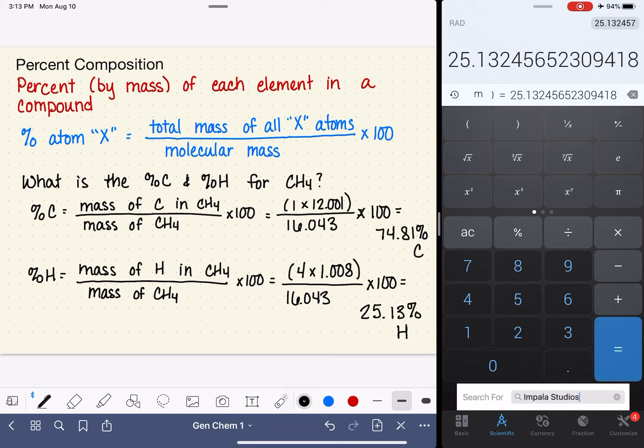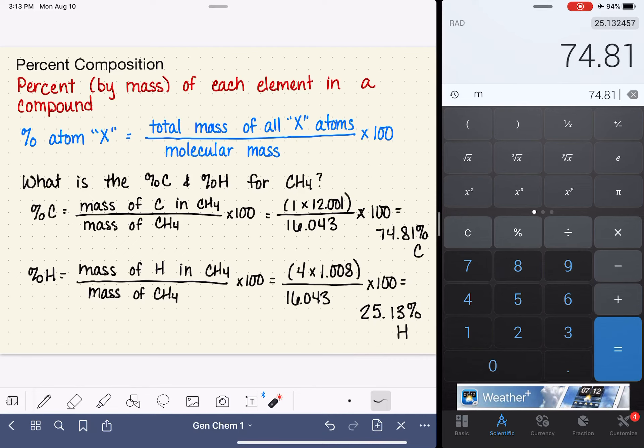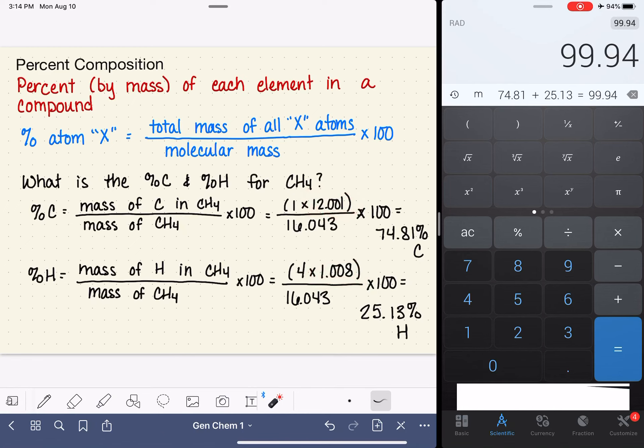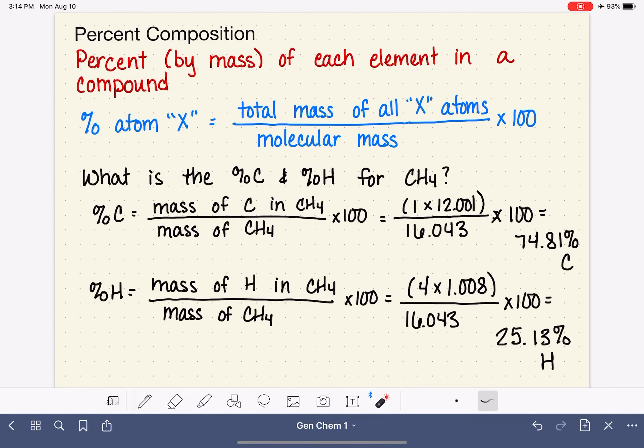That doesn't work out to be exactly 100 when we add it together. 74.81 plus 25.13, we're very close to 100. The reason that it's not quite perfectly exact is because even these numbers from the periodic table have been rounded a bit. So what we're seeing is just a little bit of rounding error. But it's so close to 100 that we feel confident that this is correct. And that is how you would solve a percent composition problem.